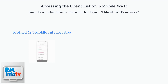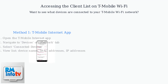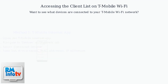In the T-Mobile Internet app, navigate to the Devices or Network tab, then select Connected Devices. This will display a list of all active devices on your network, including device names, MAC addresses, and IP addresses.